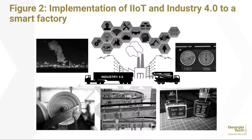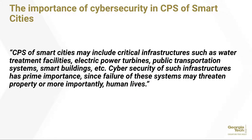When an intrusion happens for a cyberphysical system in a smart city context, it needs to be detected quickly to prevent further serious damage or loss. The authors emphasize that cyberphysical systems of smart cities may include critical infrastructures such as water treatment facilities, electric power turbines, public transportation systems, and smart buildings — and cybersecurity of such infrastructures has prime importance since failure may threaten property or, more importantly, human lives.